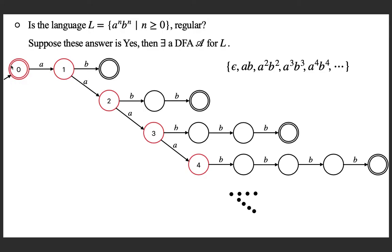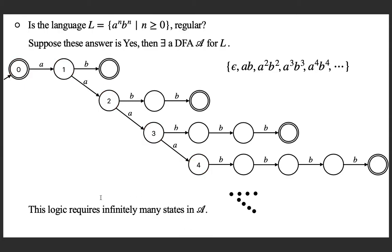For accepting AB, there is an important boundary state between A and B. For A-squared B-squared this is the boundary; for A-cubed B-cubed this is the boundary; for A-to-the-4 B-to-the-4 this is the boundary. So in this naive design, you need a separate state for each n — for n=0, n=1, 2, 3, etc. This looks like this simple logic requires infinitely many states. That is not possible; a DFA has only finitely many states.